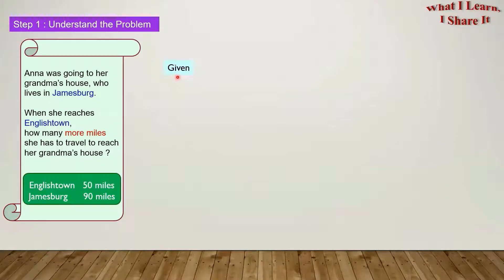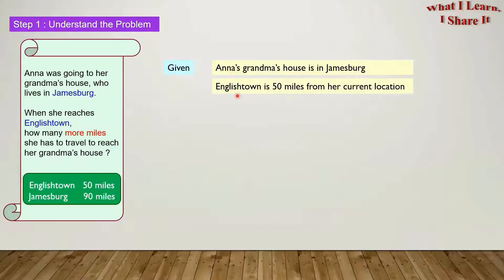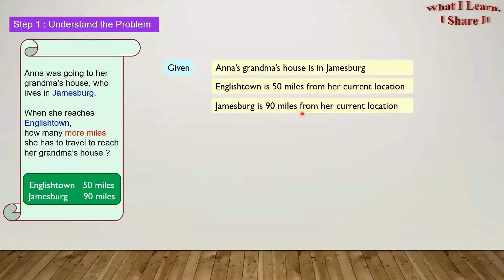So what is given to us? We are given that Anna was going to her grandma's house who lives in Jamesburg. In our own words, we can write that Anna's grandma's house is in Jamesburg. English Town is 50 miles and Jamesburg is 90 miles. So in our own words, English Town is 50 miles from her current location, and Jamesburg is 90 miles from her current location.